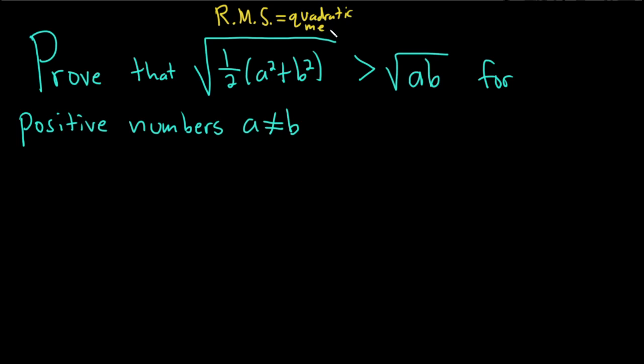And the right-hand side is called the geometric mean. So we're essentially proving that for positive numbers that are distinct, the root mean square or quadratic mean is greater than the geometric mean.